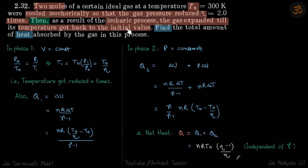So let us individually calculate that. In phase one, volume is constant because it is cooled isochorically, and it's given that pressure gets reduced eta times. So if initial temperature is given, let's find final temperature so that we can find what is the change in internal energy.